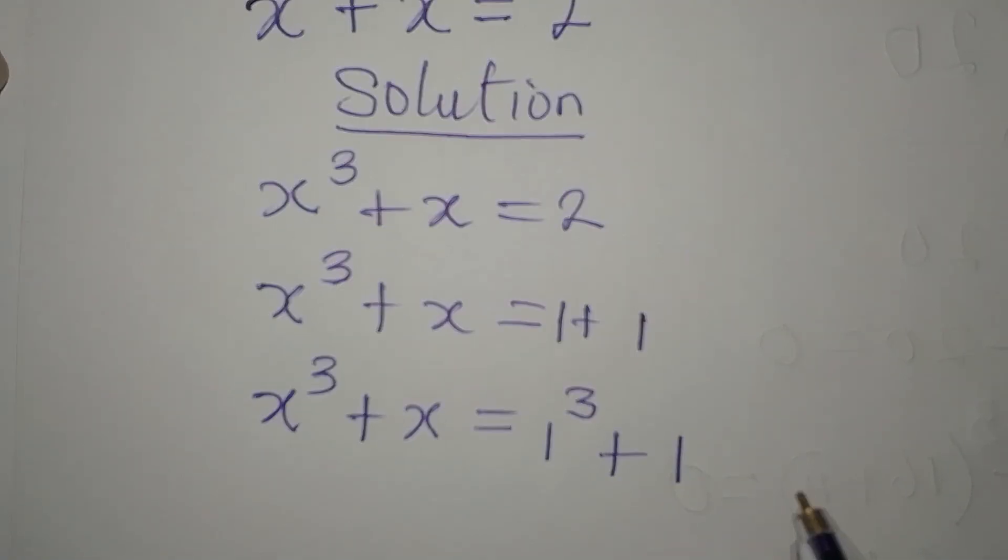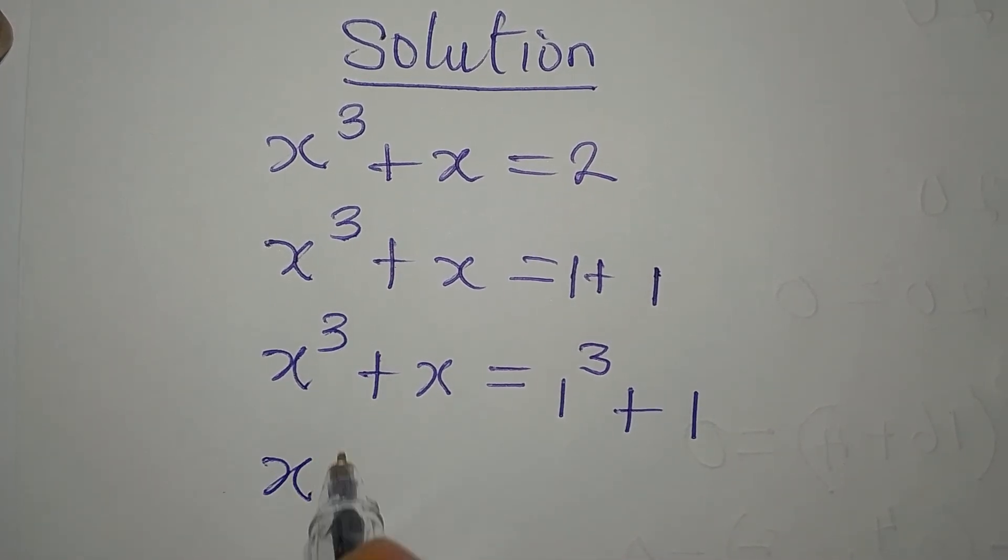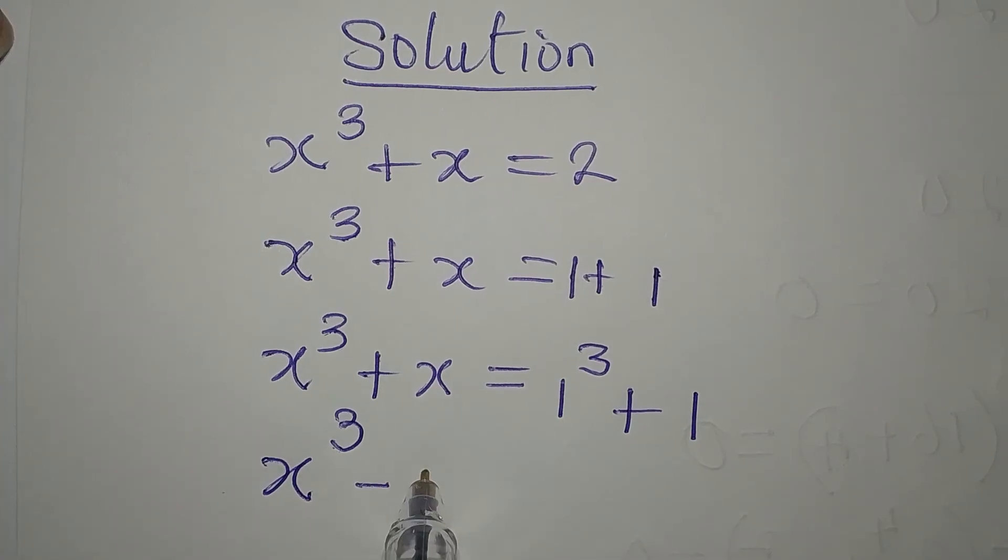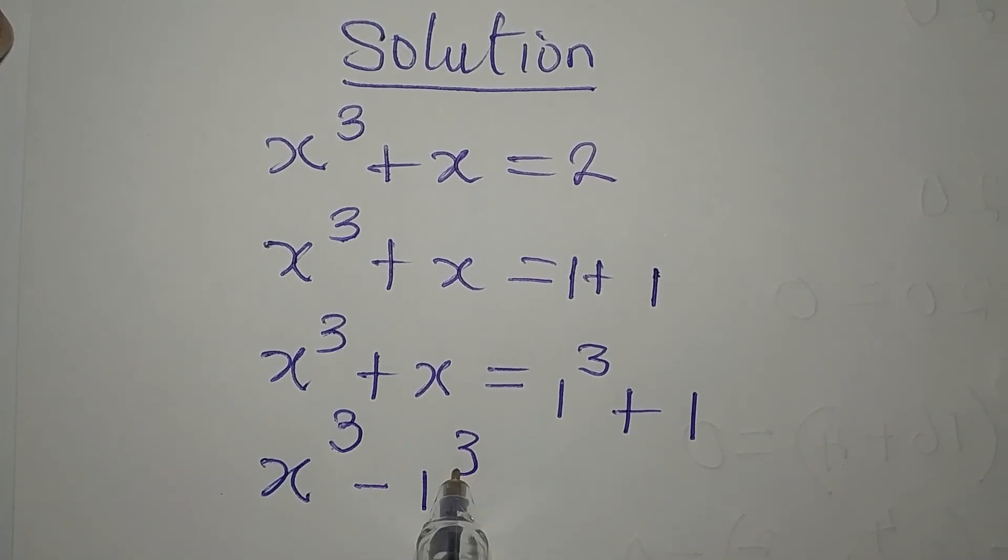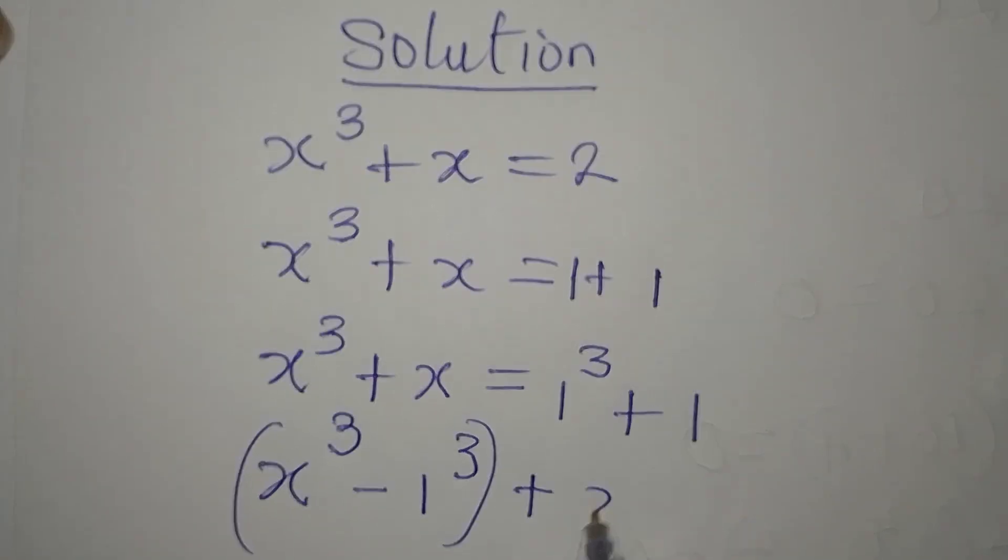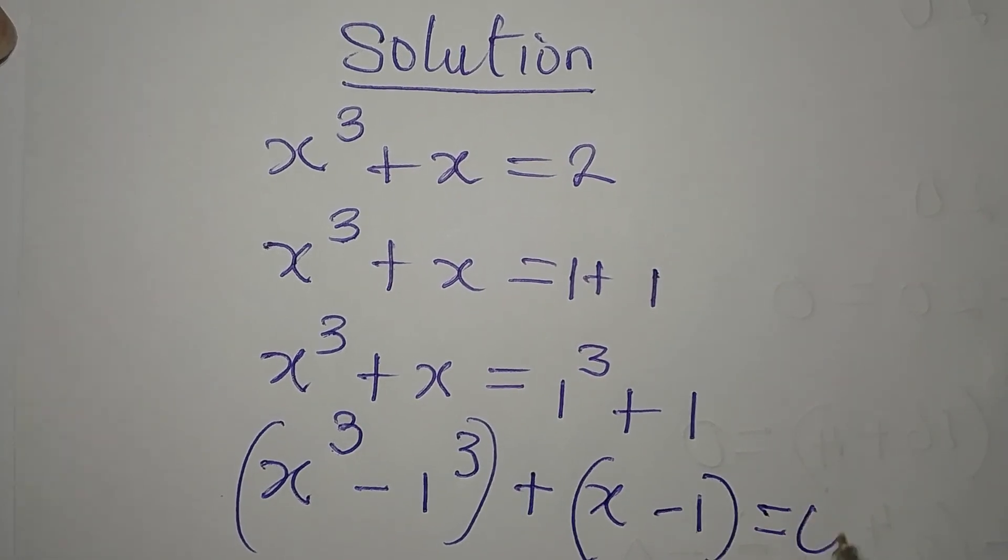Now, look at the left hand side and the right hand side. They are in the same form. So what you will do next is to collect terms. x to the power of 3 minus 1 to the power of 3 will come together, then plus x minus 1, and we equate this to 0.